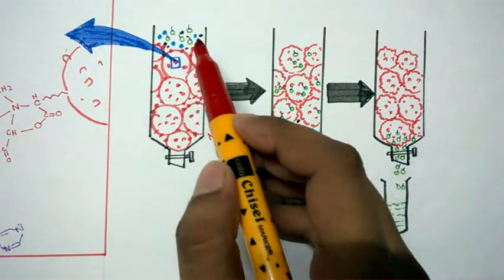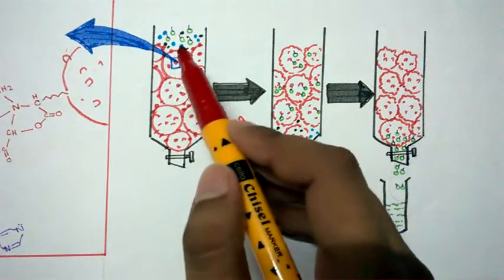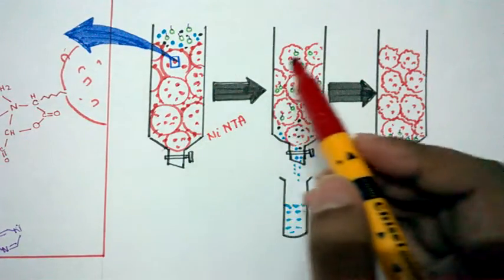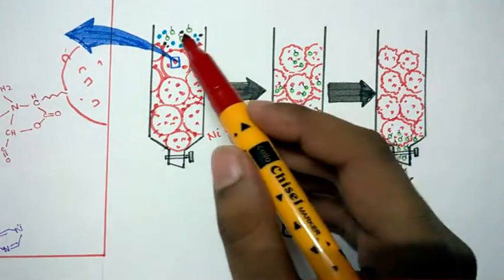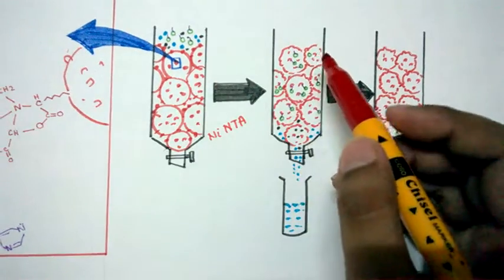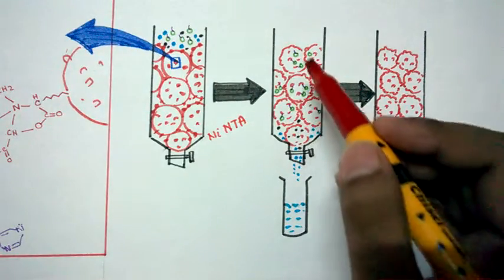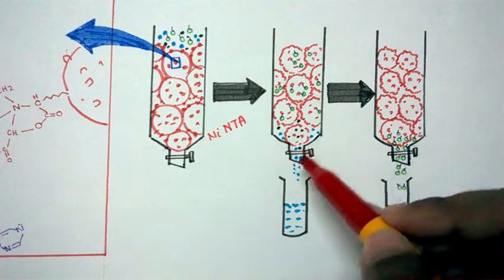So the principle in a nutshell is like we put our bacterial lysate which contain our protein along with many other proteins and now what would happen, due to our protein having a selective tag, our protein would bind to the matrix and the rest of the proteins would be washed out.